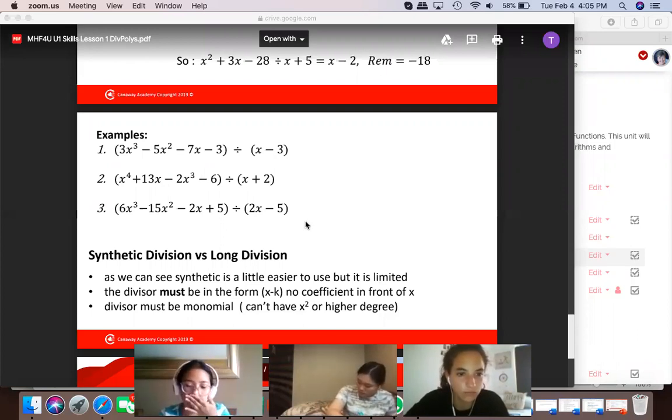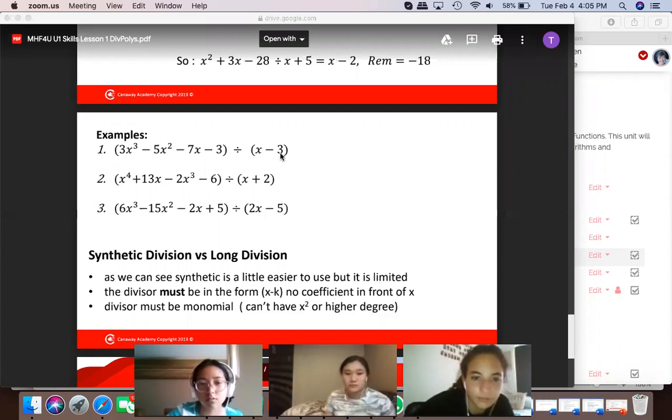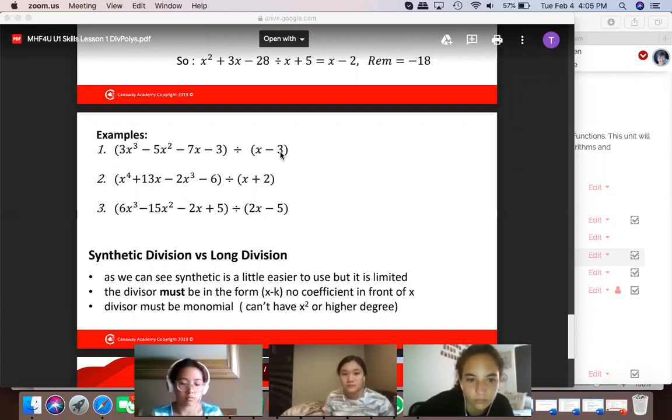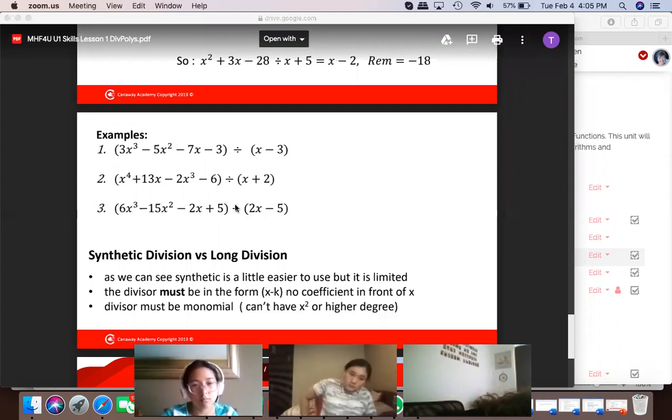Now before we start, there's something tricky happening. Remember I told you, for number 1 we put 3 on the outside, correct? For number 2, we put negative 2. So we're always putting what the 0 is of that. Like, x minus 3 would equal 0 when x equals 3. x plus 2 would equal 0 when x equals negative 2.